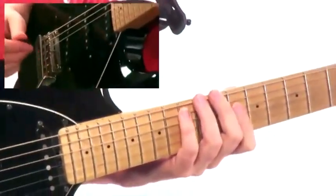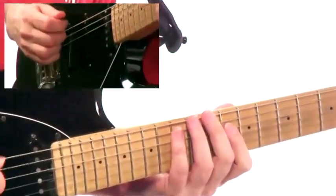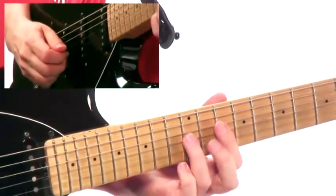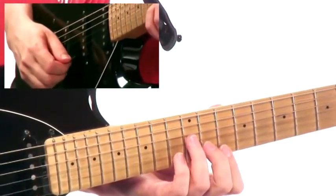Okay, so let's take a look at the notes here. What we have is the 3rd to the b7 to the root to the 5th to the b7 to the 9th.